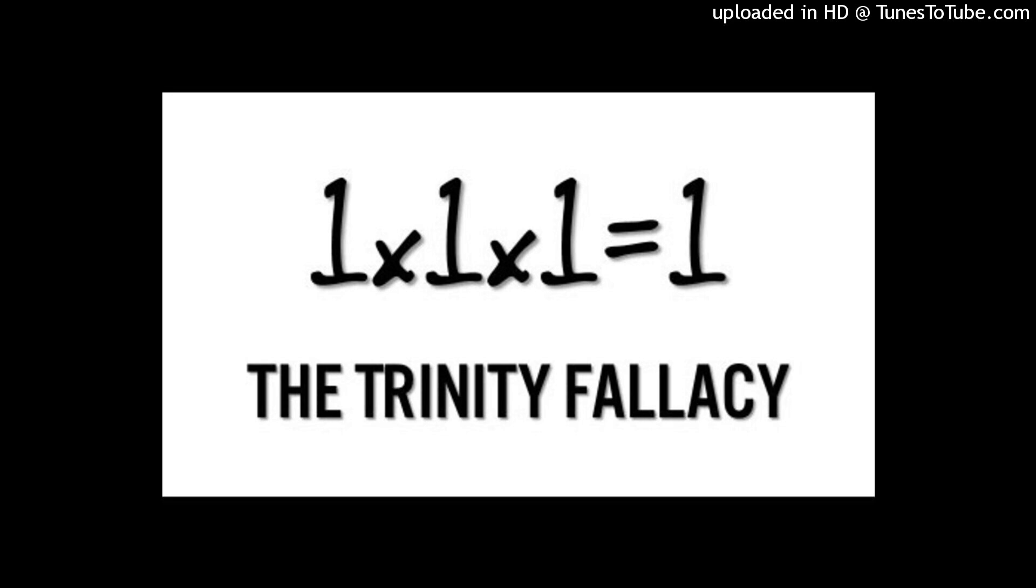The Trinity is defined as being both one and three simultaneously. From a purely mathematical standpoint, this is nonsensical because there is no numerical value that can simultaneously be one and three. Basically, the Trinity is defined as a number that is both less than two and more than two. Obviously, there is no such number.